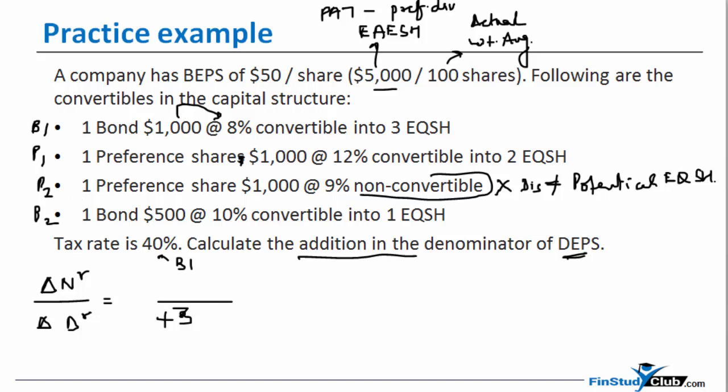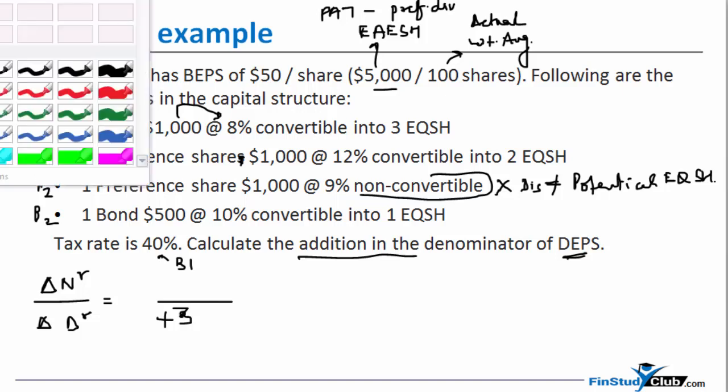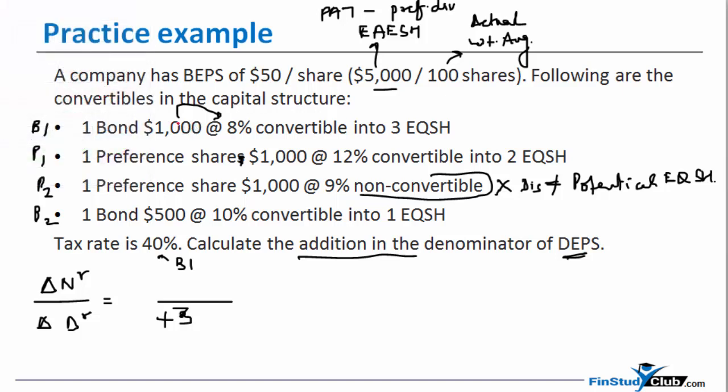Talking about the numerator now, this interest, how much would that interest have been? A thousand into eight percent, which is eighty, would now be not required to be paid, therefore that will be a saving. But you have to also understand that interest is a before tax element.